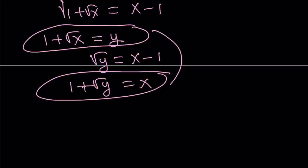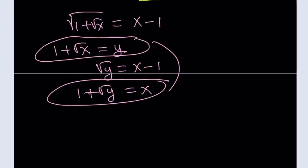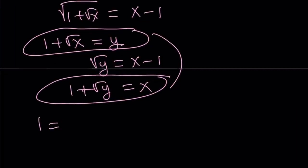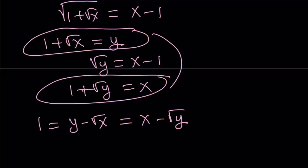You can also do the following: isolate 1 from each equation. From the first equation, 1 can be written as y minus square root of x. From the second equation, 1 can be written as x minus square root of y. So now you do get a single equation. We had a single variable, turned it into two variables, got a system, and now we turn it back into one equation.